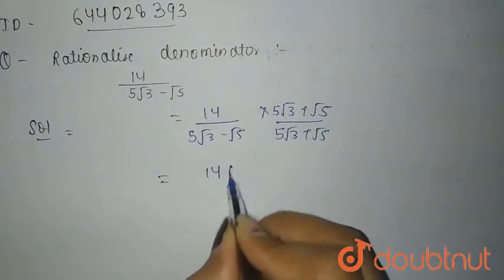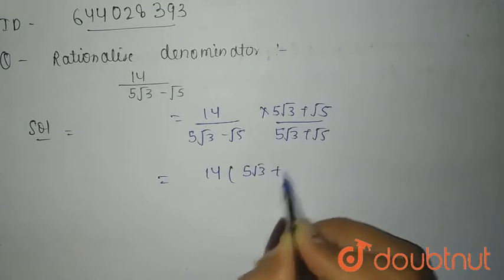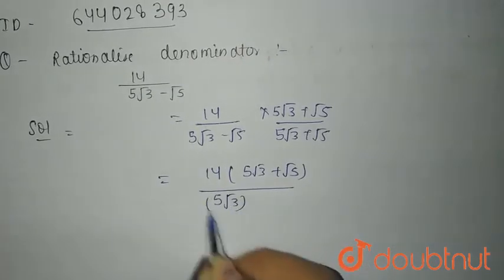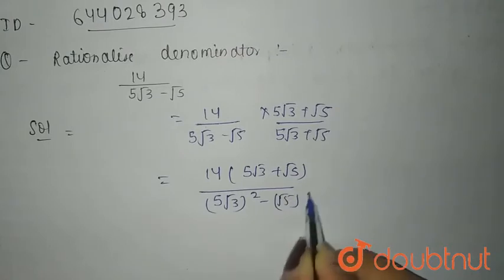It will give you 14 times 5 root 3 plus root 5, divided by 5 root 3 whole squared minus root 5 whole squared.